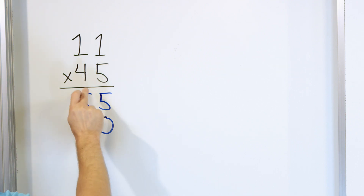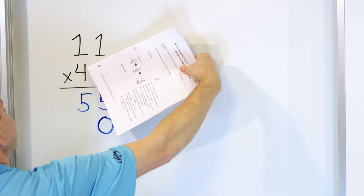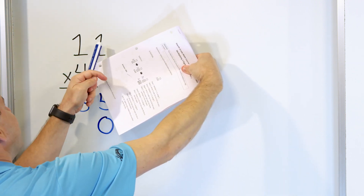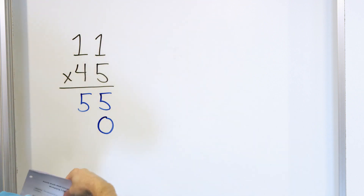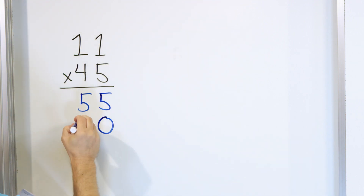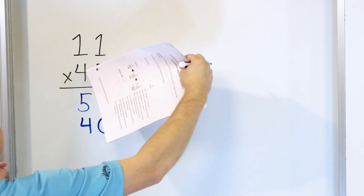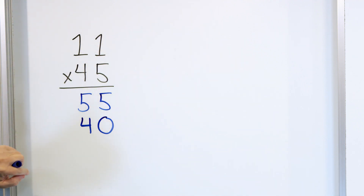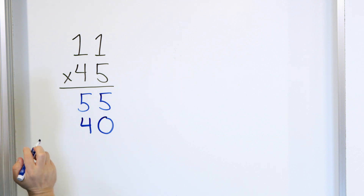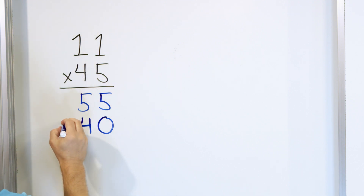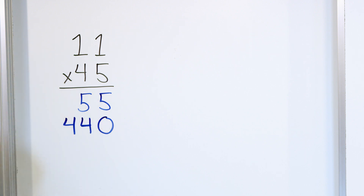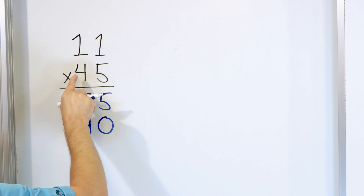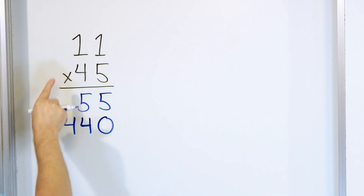Now that we've dropped the 0 there, we pretend that the 5 is not even here. We always start in the right column: 4 times this 1 is 4, and that number gets written right here. Again, pretend the 5 is not there. Now we have 4 times this 1. So we multiply this times this digit, and then this times this digit. 4 times 1 is 4, so we shift over and create a new column. The 0 goes because we have two digits, then 4 times 1 is 4, and 4 times this 1 is 4.